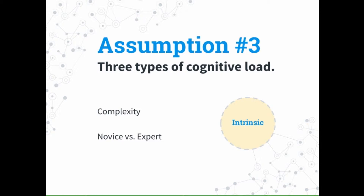The third assumption is that there are three different types of cognitive load. The first is intrinsic — the complexity of the learning experience, whatever the topic is. There's some argument over whether this can be affected by instructional design. If you're learning something new with no schema built up, it's going to be more complex. A novice will need more effort to learn, while someone with expertise has schema already built, so the intrinsic load may be less. Intrinsic cognitive load can be affected, but more by the learning process itself.